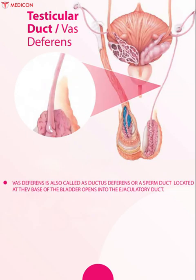Vas deferens, also called ductus deferens or sperm duct, is located at the base of the bladder and opens into an ejaculatory duct.